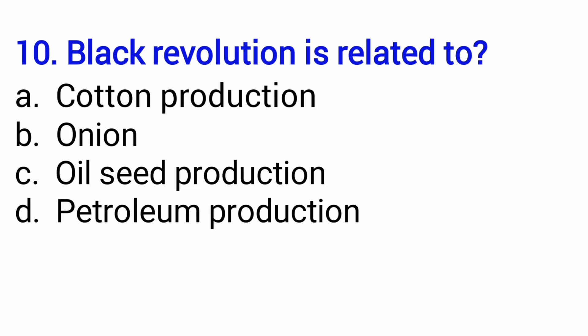The 10th question: black revolution — kali kranti kisse sambandit hai? Is it cotton production, onion, oilseed production, or petroleum production? You need to remember the answer is option number D — petroleum production. So black revolution is related to petroleum production.